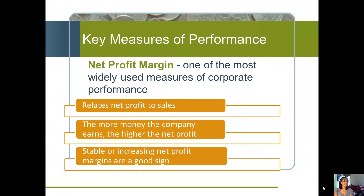Another key measure is net profit margin. This is most widely used. When we think about a firm and its performance, we oftentimes think about profits. Net profit margin relates that bottom line profit — revenues minus expenses — to their actual revenues or sales.